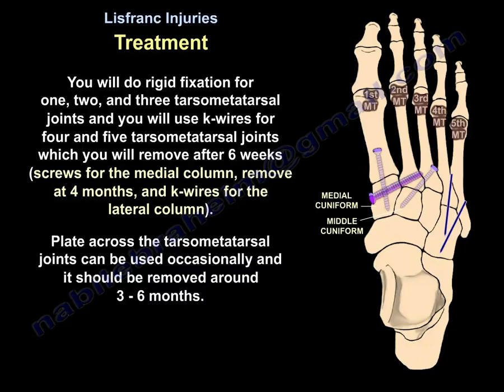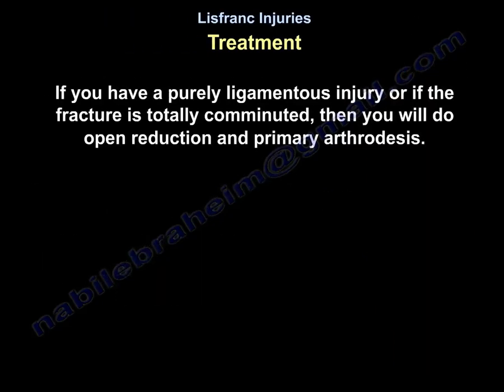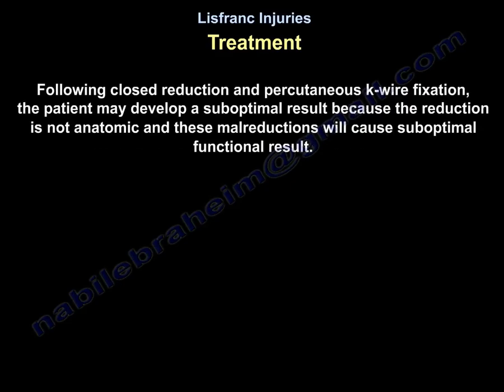Plates across the tarsometatarsal joints can also be used and should be removed around three to six months. If the injury is purely ligamentous or the fracture is totally comminuted, perform open reduction and primary arthrodesis. Following closed reduction and percutaneous K-wire fixation, the patient may develop a suboptimal result because the reduction is not anatomic, leading to suboptimal functional outcomes.